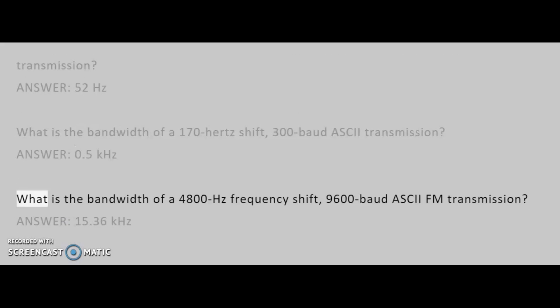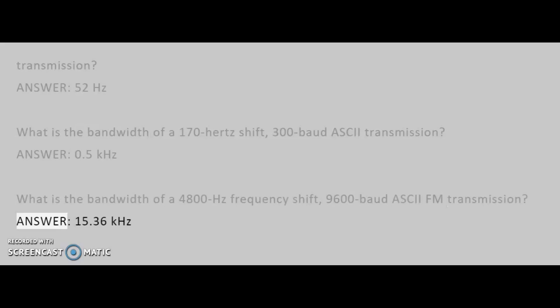What is the bandwidth of a 4,800 Hz frequency shift, 9,600 baud ASCII FM transmission? Answer: 15.36 kHz.